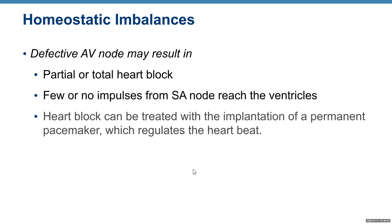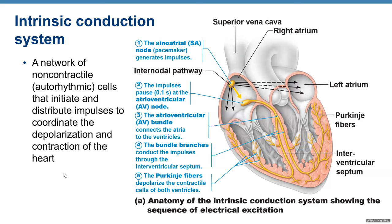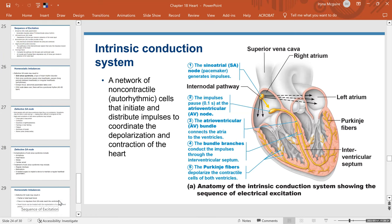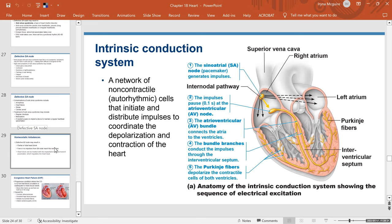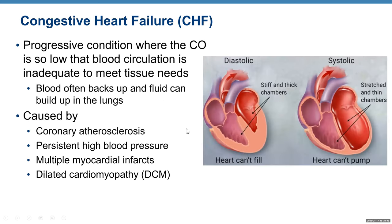If the AV node is not functioning, we call it heart block — partial or total. Without AV node function, electricity cannot pass from the pacemaker to the ventricles, so ventricles cannot contract. This is a more serious condition than SA node dysfunction. Heart block can be treated with implantation of a permanent pacemaker to regulate the heartbeat.